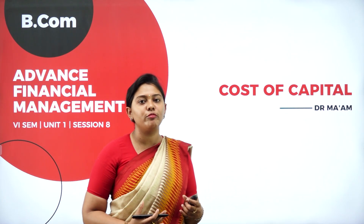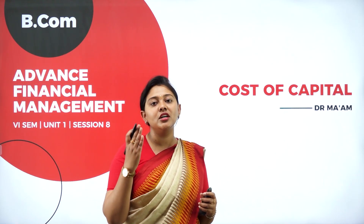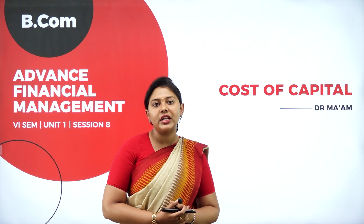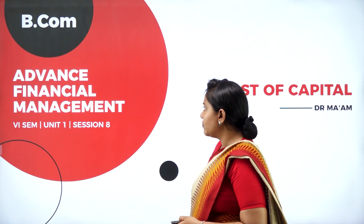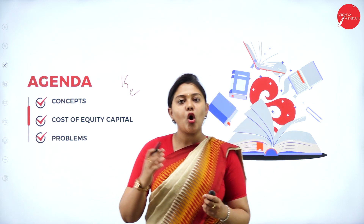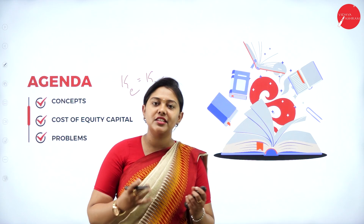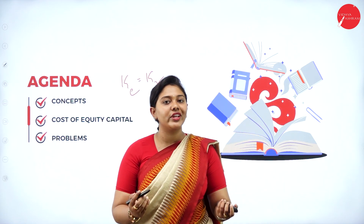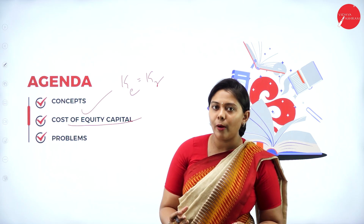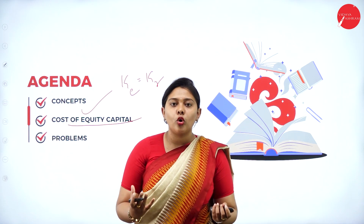We covered the cost of preference shares and redeemable preference shares. We also discussed equity shares and how to calculate the cost of equity shares, including the different formulas. Cost of equity is symbolically represented as K subscript E. Cost of equity equals cost of retained earnings — this was also discussed. The agenda for today is cost of equity capital concepts, and we will be solving problems. Complete equity cost calculation will be shown today.